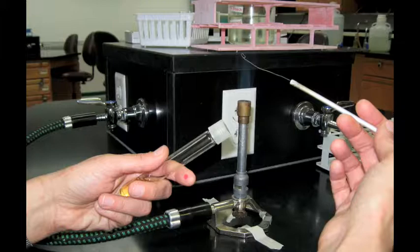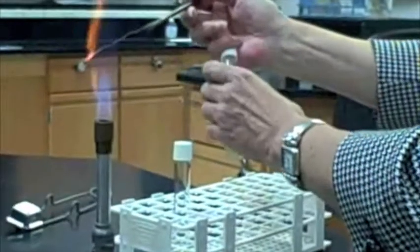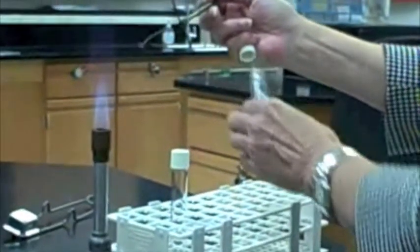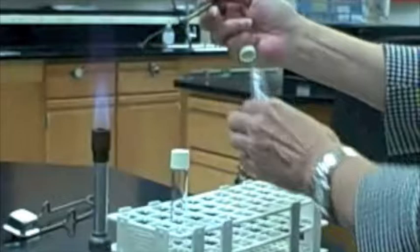Now, unscrew the top of the tube with the pinky finger of the hand holding the loop. Keep holding the cover with your pinky finger. Also, keep in mind that whenever you have tubes open, you should hold them at a slant to prevent contaminants from falling into the tube.